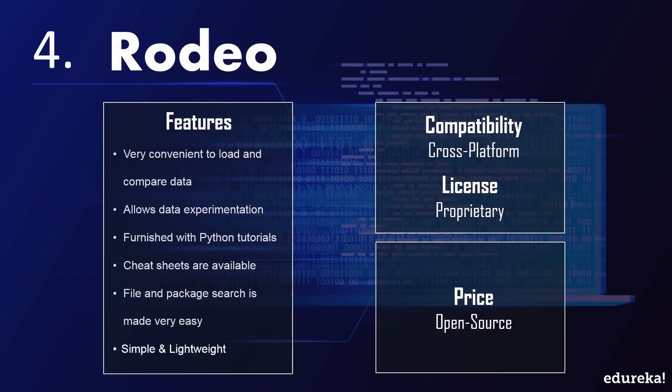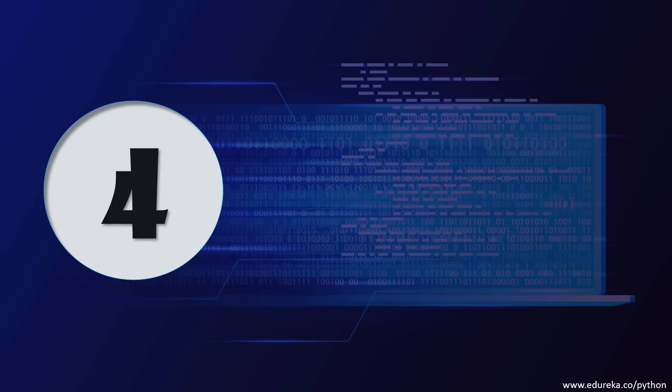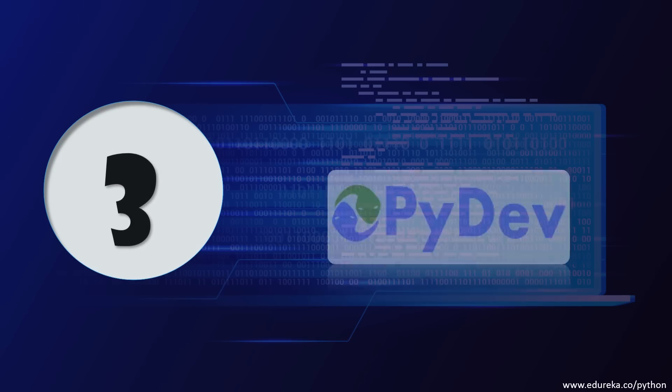At position 4 is Rodeo. Rodeo is an open source cross-platform IDE built specifically for machine learning and data science. Rodeo makes it very convenient to load and compare data. It also allows data experimentation and is furnished with Python tutorials to guide users, cheat sheets for material reference, easy file and package search, and is a simple, lightweight IDE.